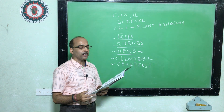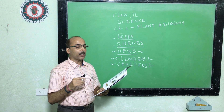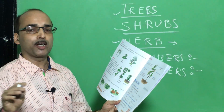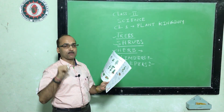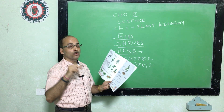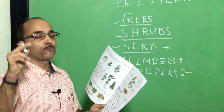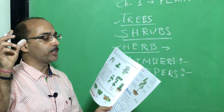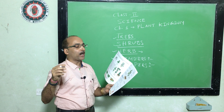This is very important — you have to draw the parts of a plant and practice the drawing. Draw one plant and show the different parts: the stem, the flower, the root, the bud, the fruit, and the leaf. Stem carries water and food to all parts of the plant.